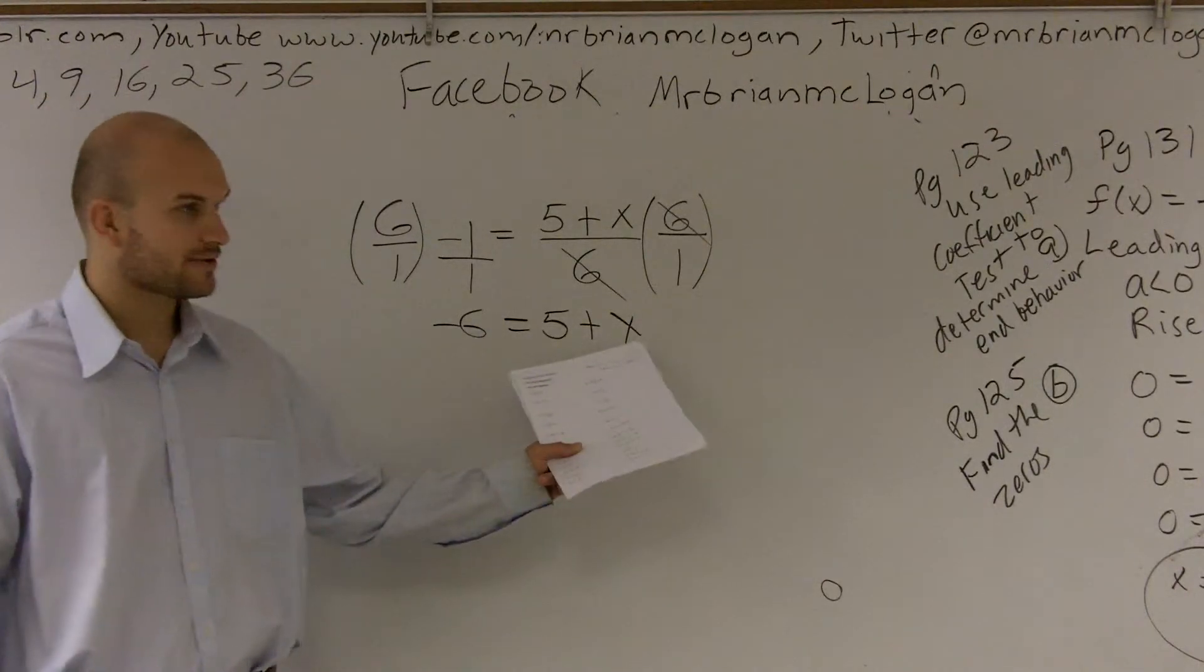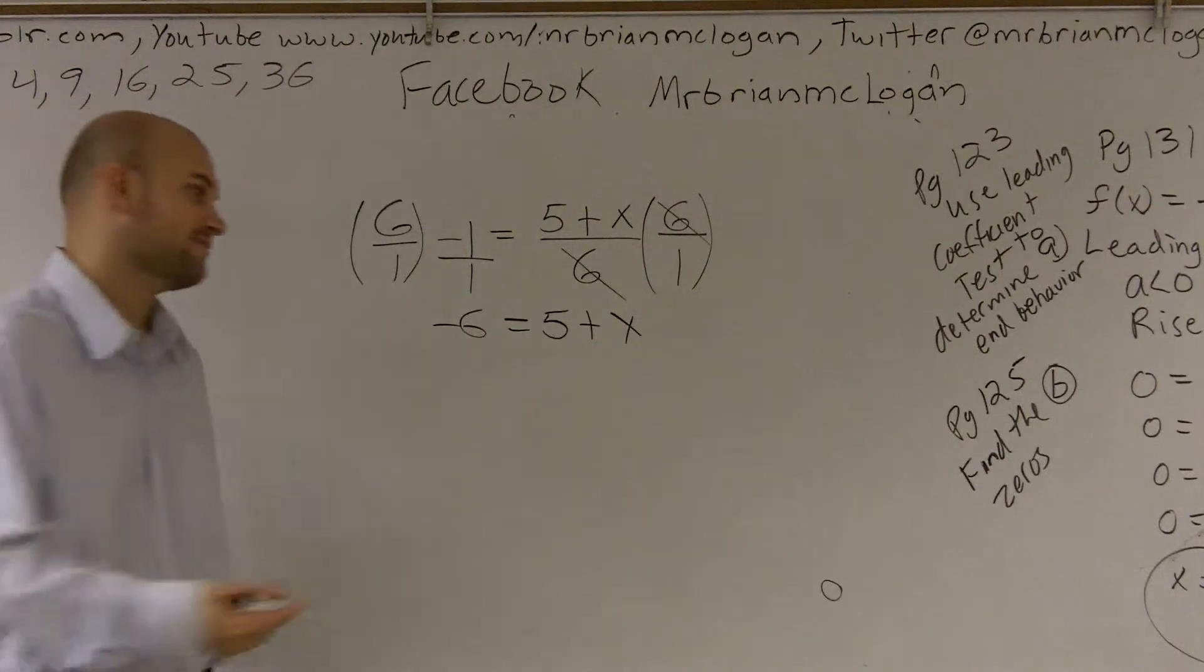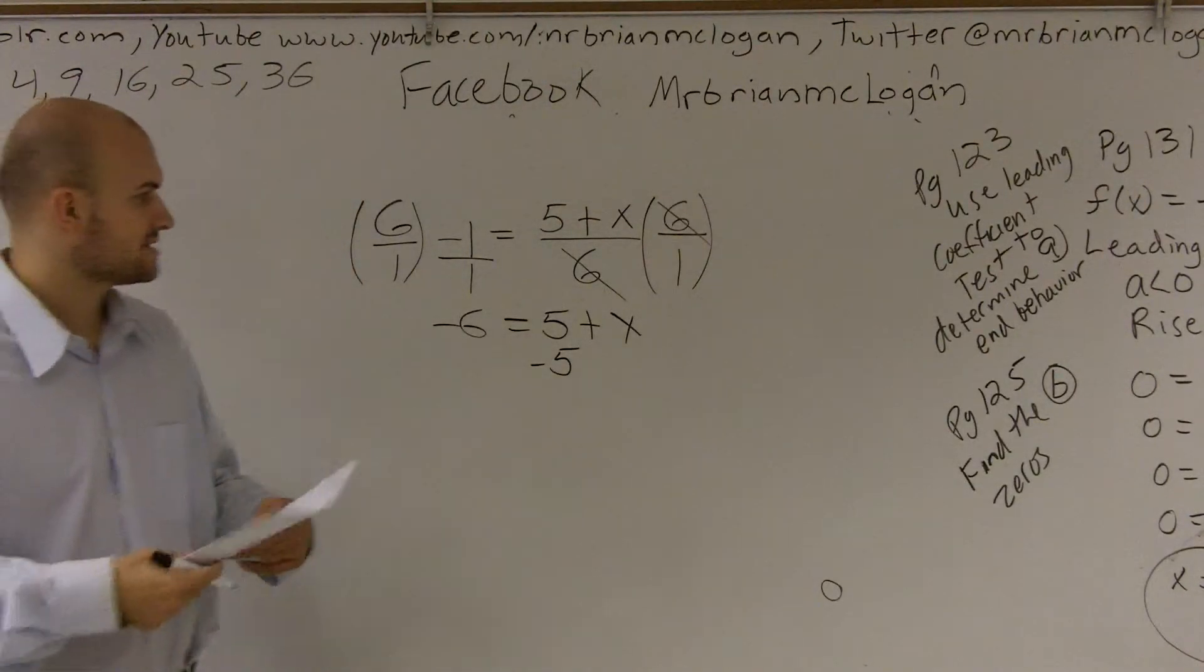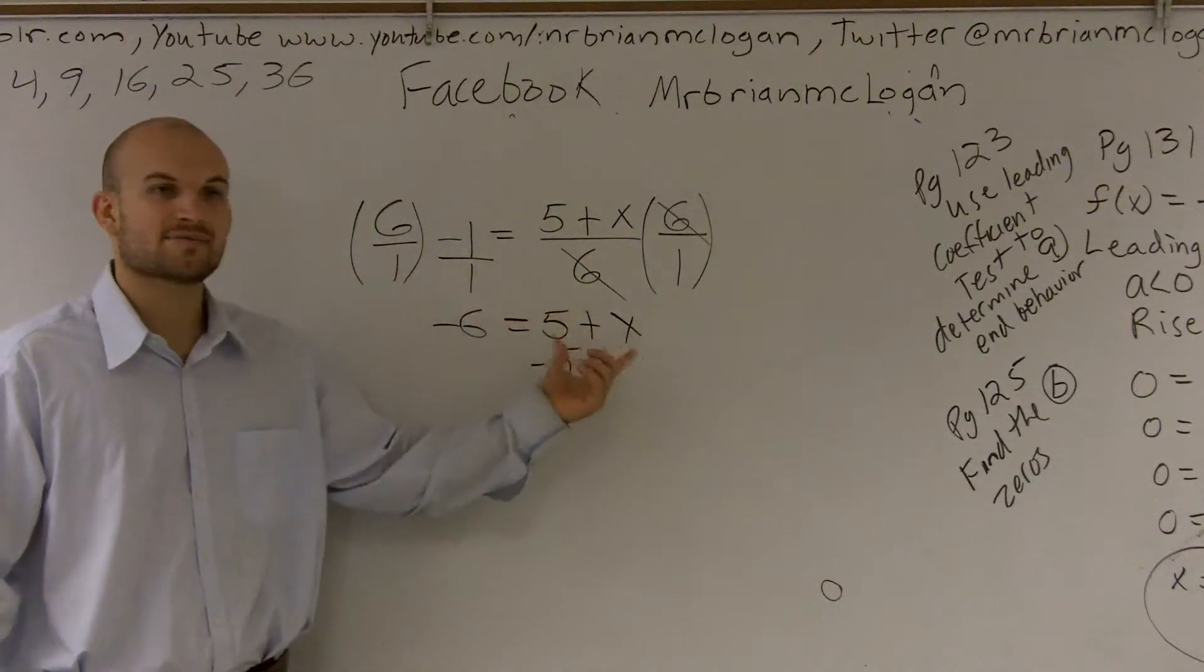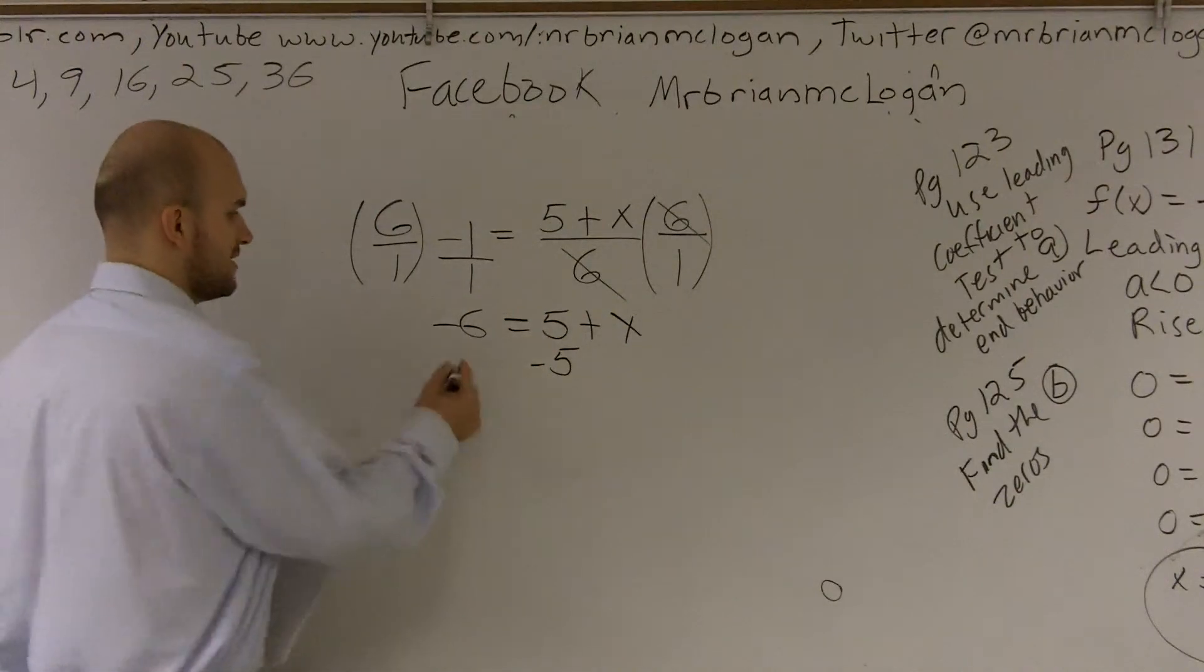Now, I have my variable on the right side, and it's being added by 5. So to undo addition by 5, I need to subtract 5. Or another way to look at this is, this is a positive 5 on the same side of x. So I want to get rid of this positive 5, so I'm going to have to subtract 5.